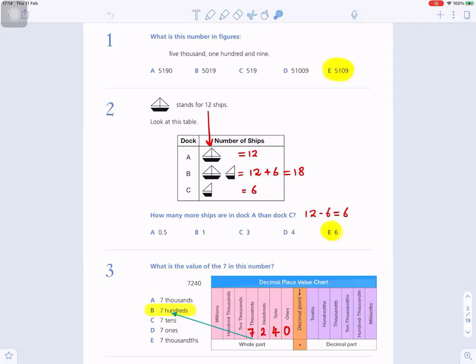The question says, how many more ships are in dock A than dock C? So in A, A has 12. C has 6. So what's the difference? 12 take away 6 is 6. So your answer is 6, and you will mark it on the answer grid.